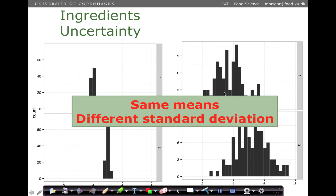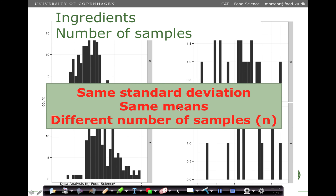On the other hand, we can have the same difference in means but different standard deviations. The standard deviation is low in one case and high in another, and it is probably easier to find a difference when the standard deviation is low, even though the effect size — the difference in means — is the same. Similarly, with the same standard deviation and the same means but a different number of samples, having very many samples makes it easier to conclude that there is a difference, while with few samples there is simply not enough data support.